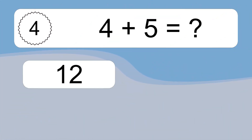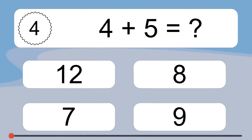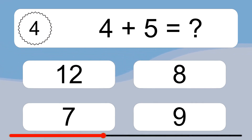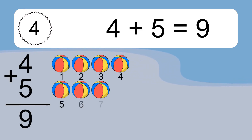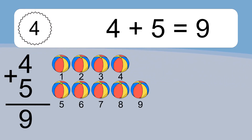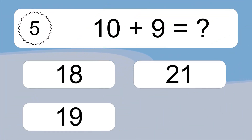4 plus 5 equals what? 4 plus 5 equals 9. Let's count it. 1, 2, 3, 4, 5, 6, 7, 8, 9. 10 plus 9 equals what?